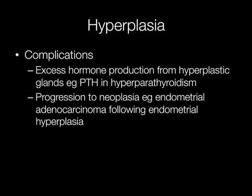Complications of hyperplasia include excess hormone production. For example, in hyperparathyroidism there may be excess production of PTH. Additionally, particularly in tissues such as the endometrium, the hyperplasia may become atypical and then develop into carcinoma.